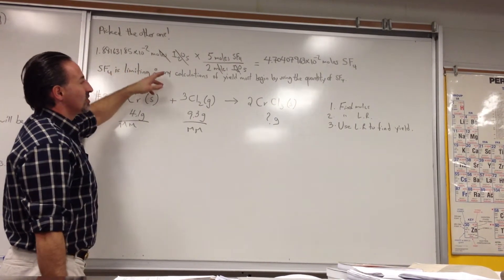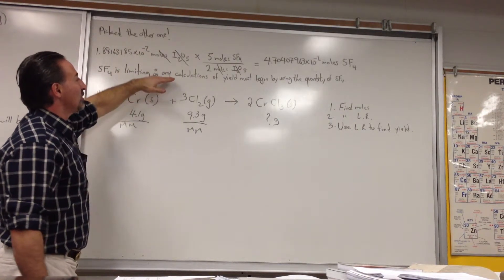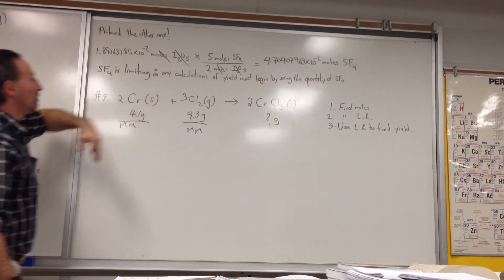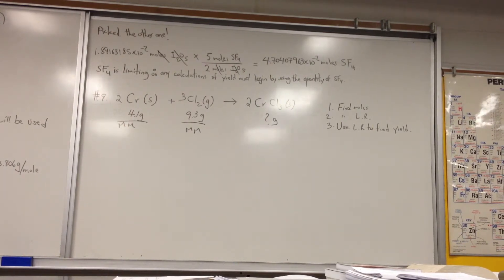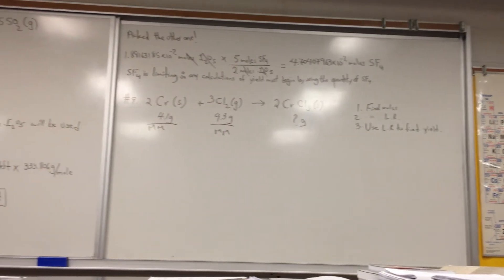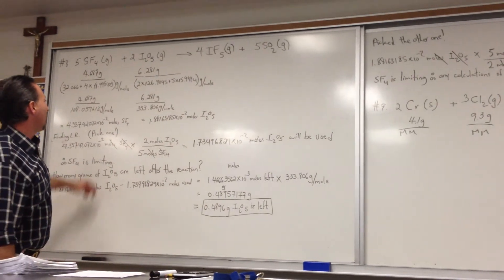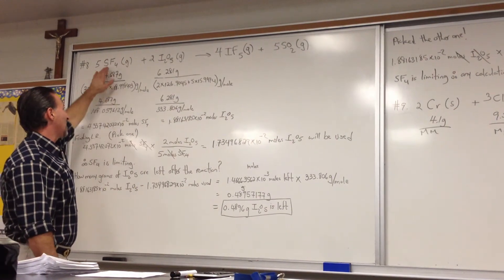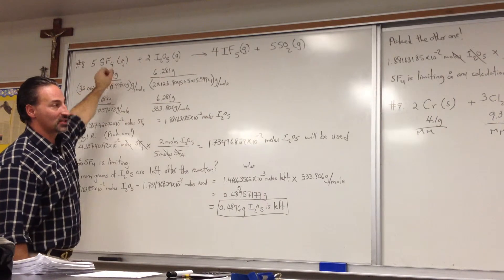Any calculations we need to yield must use the quantity of SF4. Calculations for IF5 or SO2 quantities must start with the amount of SF4 you had at the beginning, because that is the limiting reactant — it determines when the reaction is going to stop.